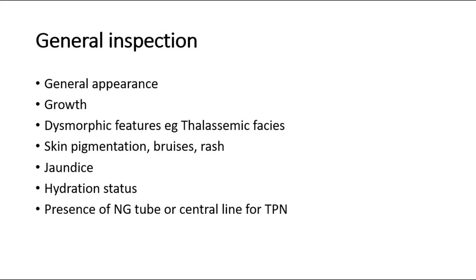On general inspection, look at the general appearance of the child. Do they look unwell? Is the child in pain? Check the growth and nutritional status by plotting the height and weight on the growth chart as indicated according to the age. Look for any dysmorphic features — because this is abdominal examination, we should look for features such as thalassemic facies, since one of the causes of hepatosplenomegaly could be thalassemia.